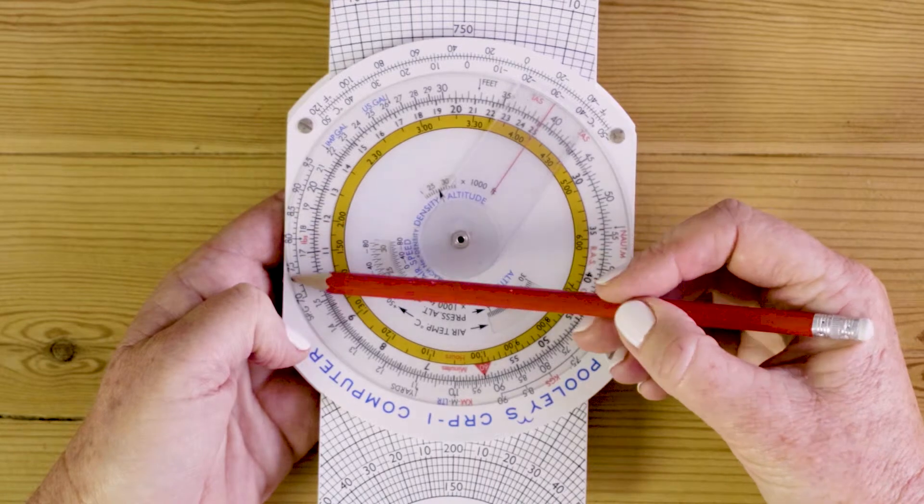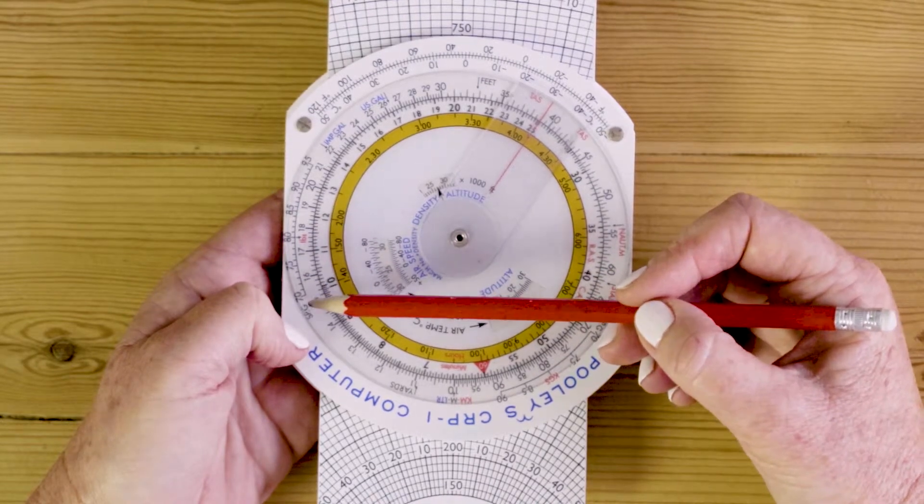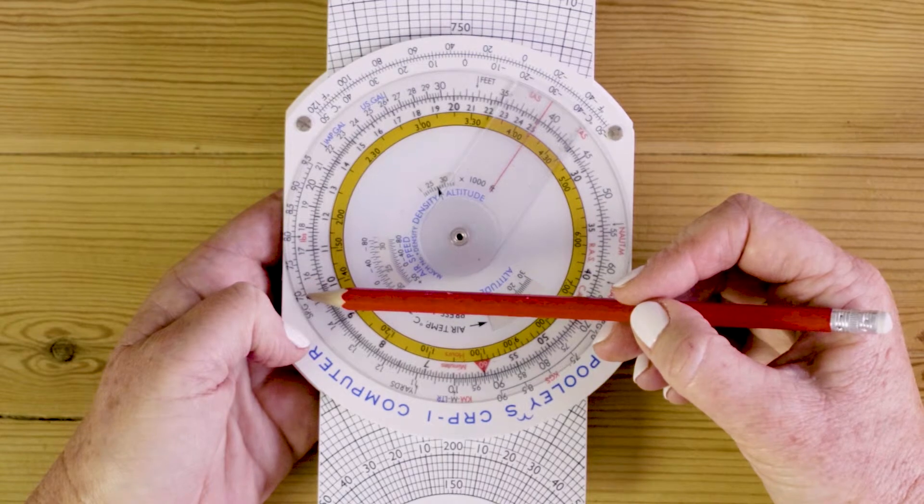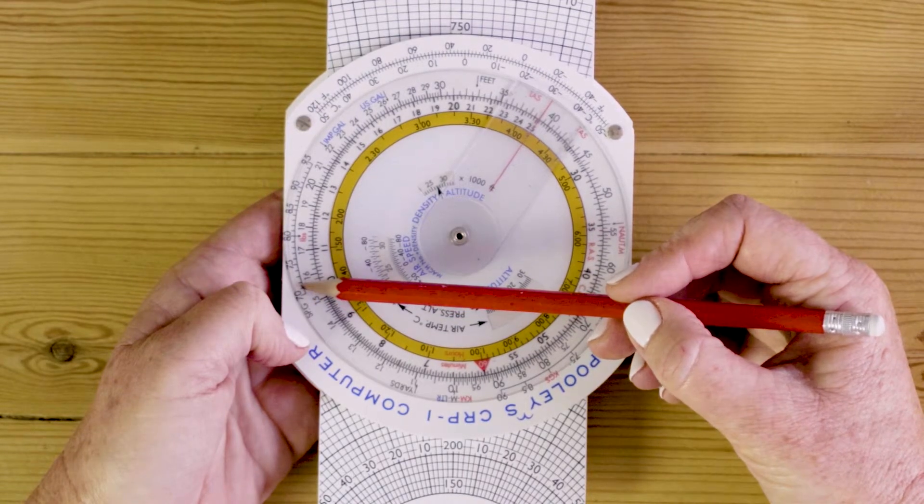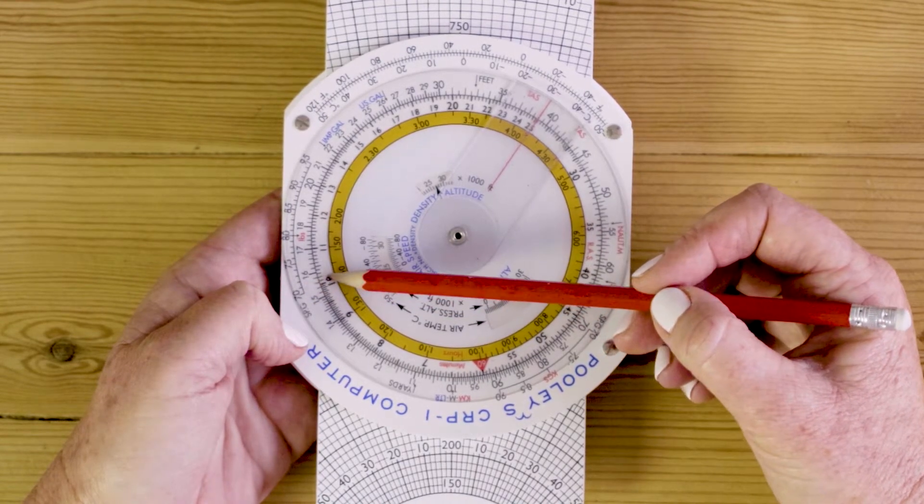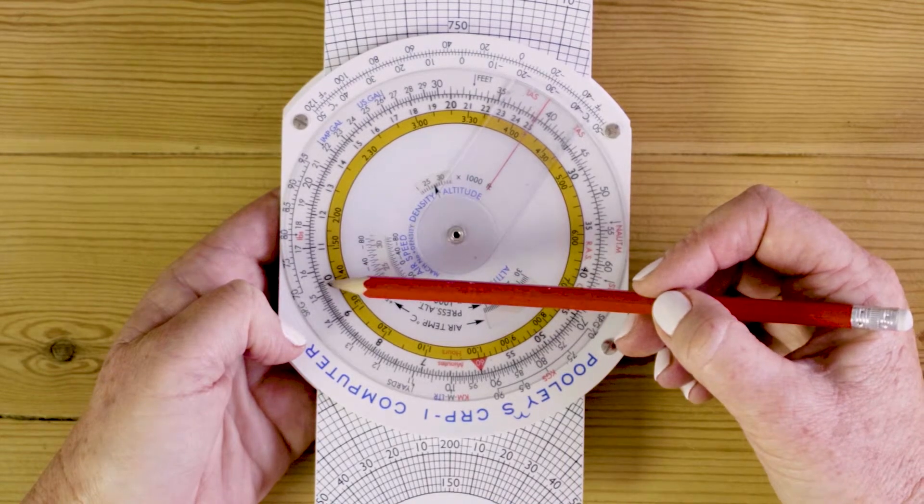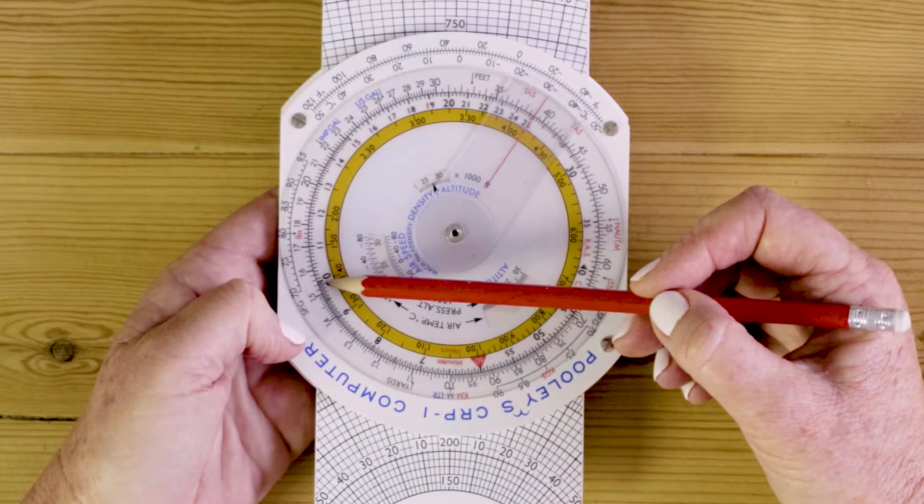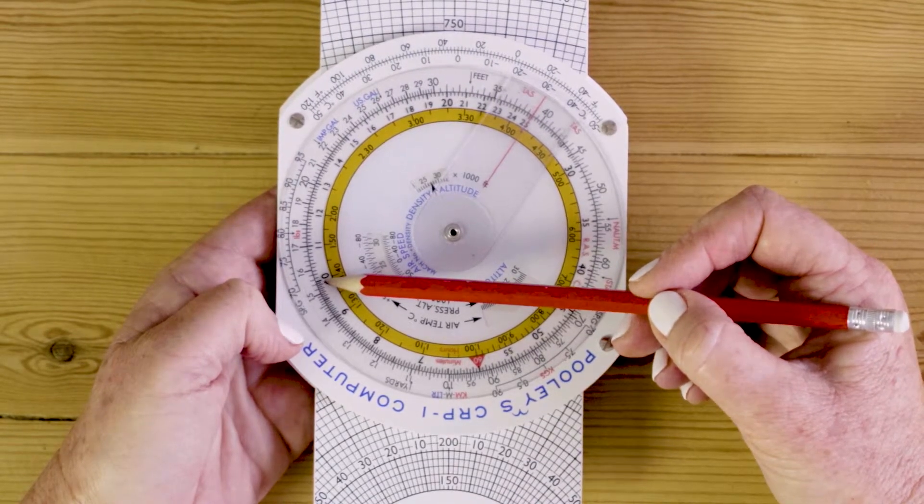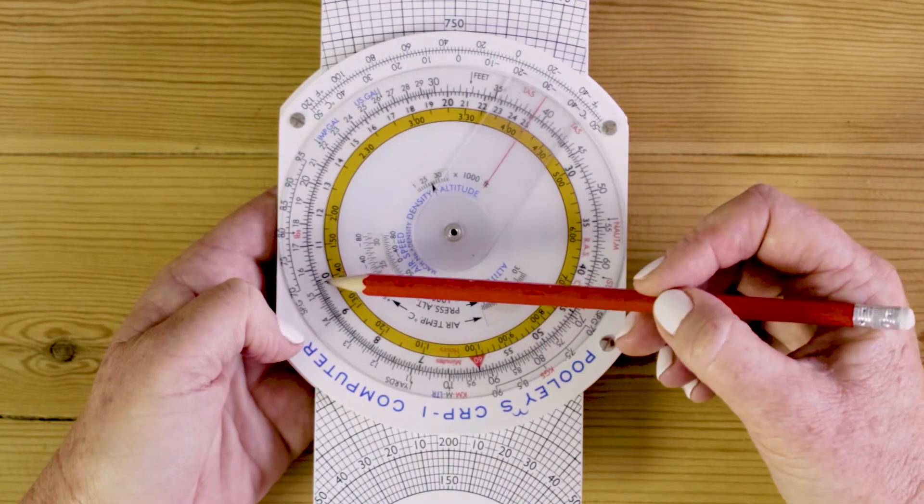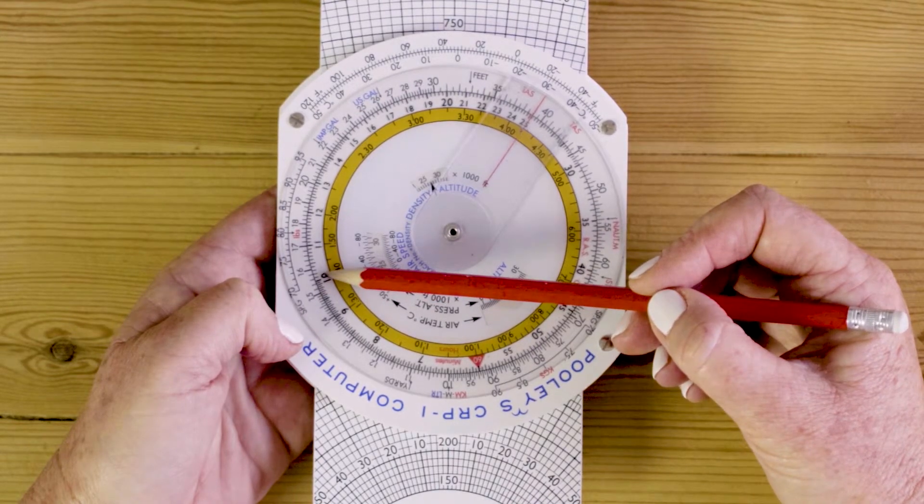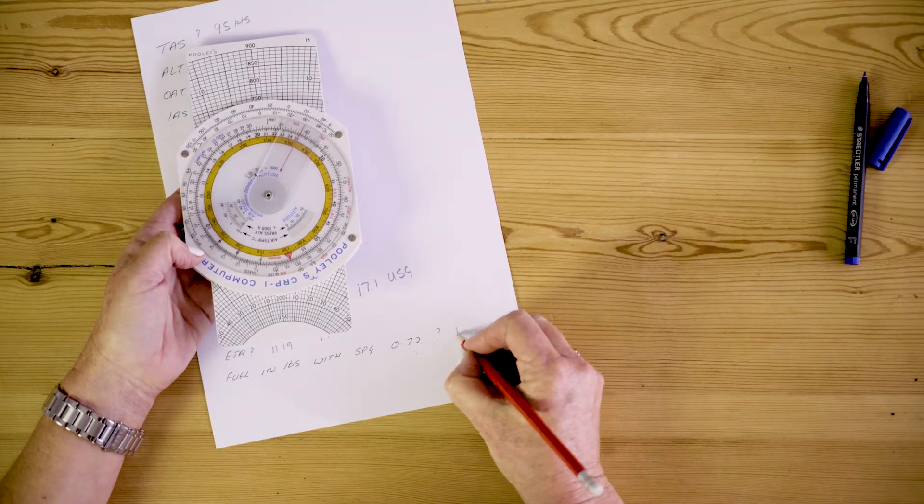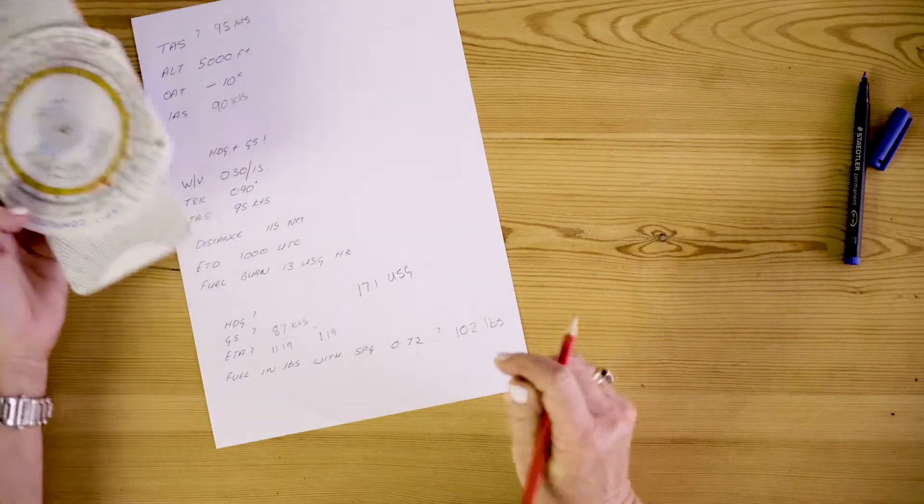Fuel Avgas 100LL has a specific gravity of 0.72. We have specific gravity around the outside here. It doesn't say point but this is 0.7, this is 0.75. So if I go to 0.72 I now read the inside. It says 10.2. Well actually I know that this is about 6.6 pounds to a gallon so it's not 10.2, it's going to be 102. I now know I need 102 pounds of fuel.